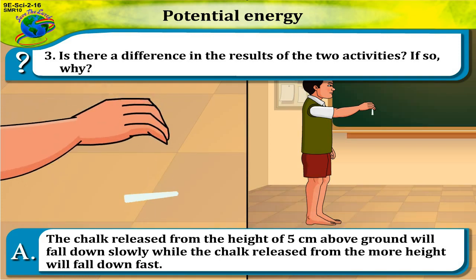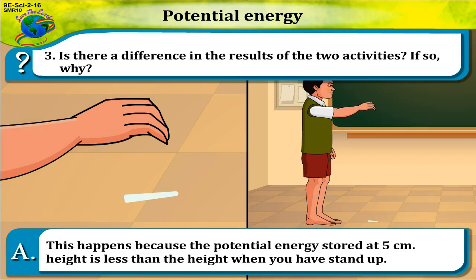While the chalk released from a greater height will fall down fast. This happens because the potential energy stored at five centimeter height is less than the height when you stand up.